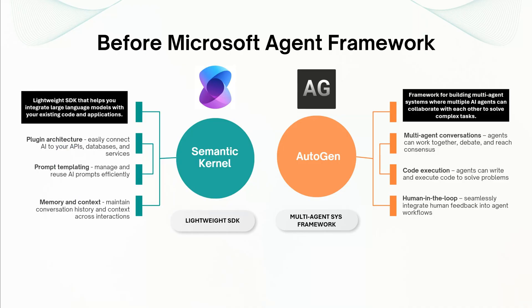On the other hand, AutoGen is a framework for building multi-agent systems where multiple AI agents can collaborate and communicate with each other to solve complex tasks.